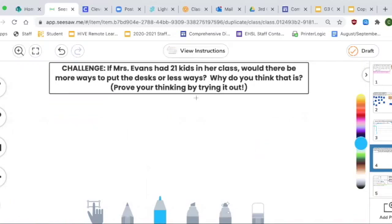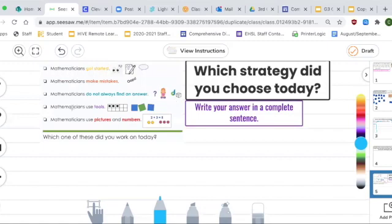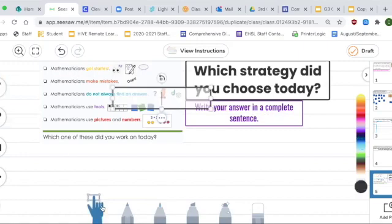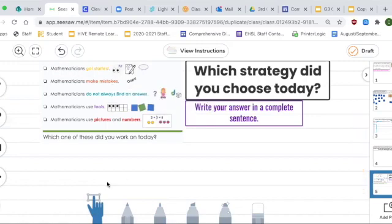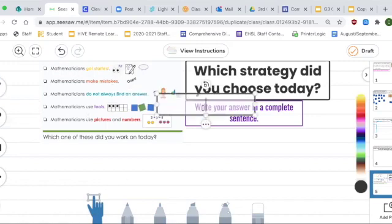And the fifth slide, remember I told you at the beginning you had to choose a strategy. This one you're going to tell me which strategy did you choose today, and you need to write your answer in a complete sentence. This is what I mean by writing it in a complete sentence. You cannot just say number two. Nope, not happening.